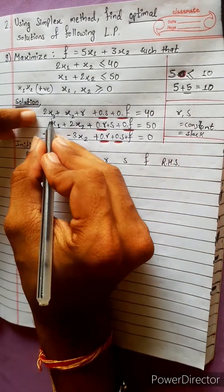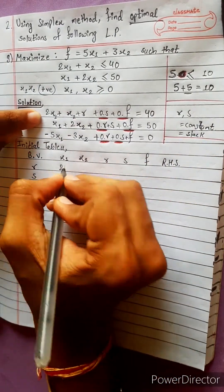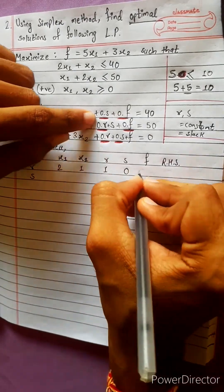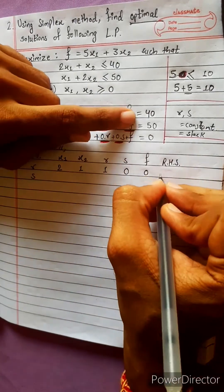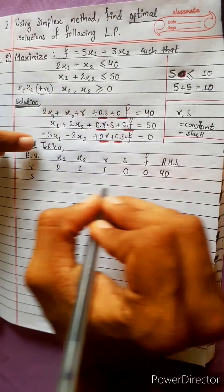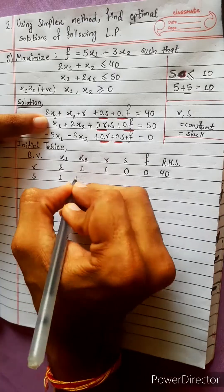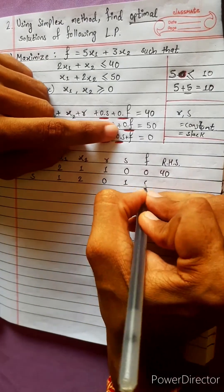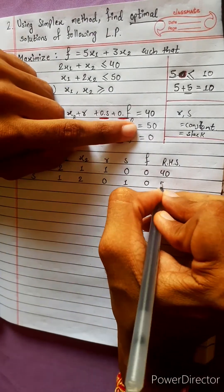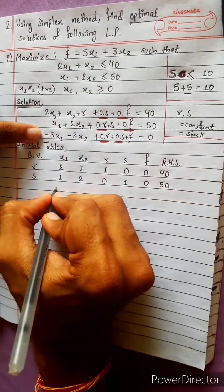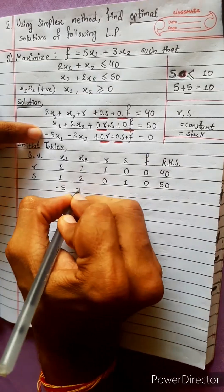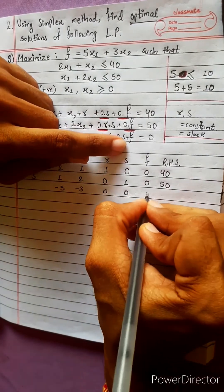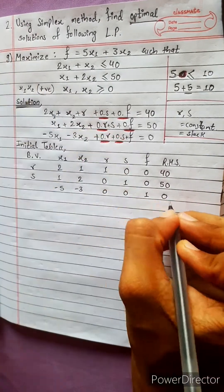The objective function is: negative 5x1 minus 3x2 plus f equals 0. The initial tableau has basic variables s and f, with columns for x1, x2, s, f, R, and RHS. Row 1: 2, 1, 1, 0, 0, 40. Row 2: 1, 2, 0, 1, 0, 50. Row 3 (objective): minus 5, minus 3, 0, 0, 1, 0.